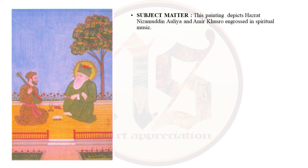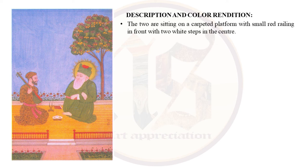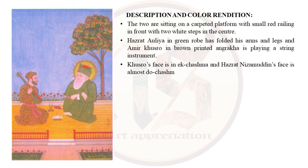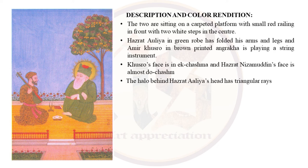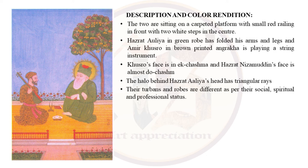The two are sitting on a carpeted platform with a small red railing in front and two white steps in the center, both engrossed in a religious recital. Hazrat Aulia is in a green robe with arms and legs folded. Amir Khusro is in a brown printed angrakha and is playing a stringed instrument. Khusro's face is in ek-chashma (profile) while Hazrat Nizamuddin's face is in almost toh-chashma (three-quarter view). The halo behind Hazrat Aulia's head has triangular rays, and his face is that of a peaceful old man detached from material life, while Khusro looks alert and attentive. Their turbans and robes differ as per their social, spiritual and professional status. There is a book, a book stand and a lamp in the center on the floor.